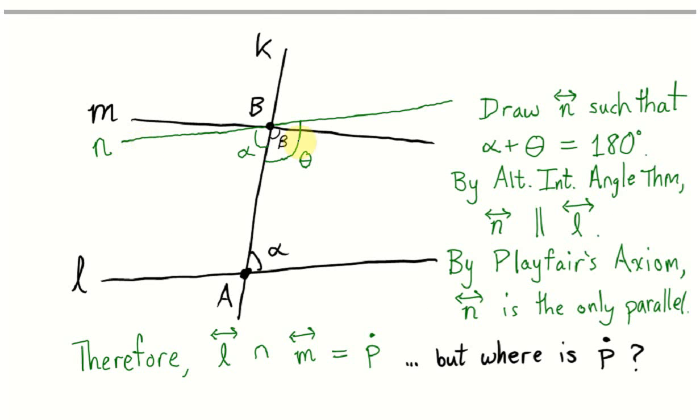So what we do next is we draw a line N such that the angle that N makes with a line K, we'll call that angle theta, we want the sum of alpha and theta to be 180 degrees. Since alpha plus beta was less than 180 degrees, we can find an angle theta larger than beta such that alpha plus theta is equal to 180 degrees.